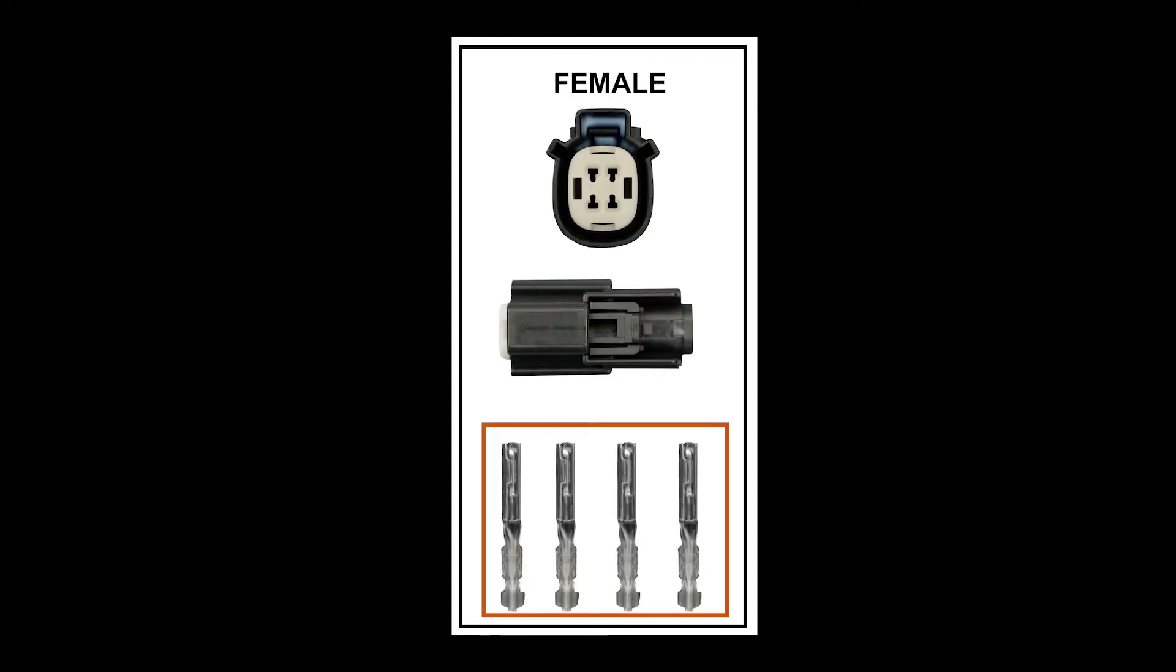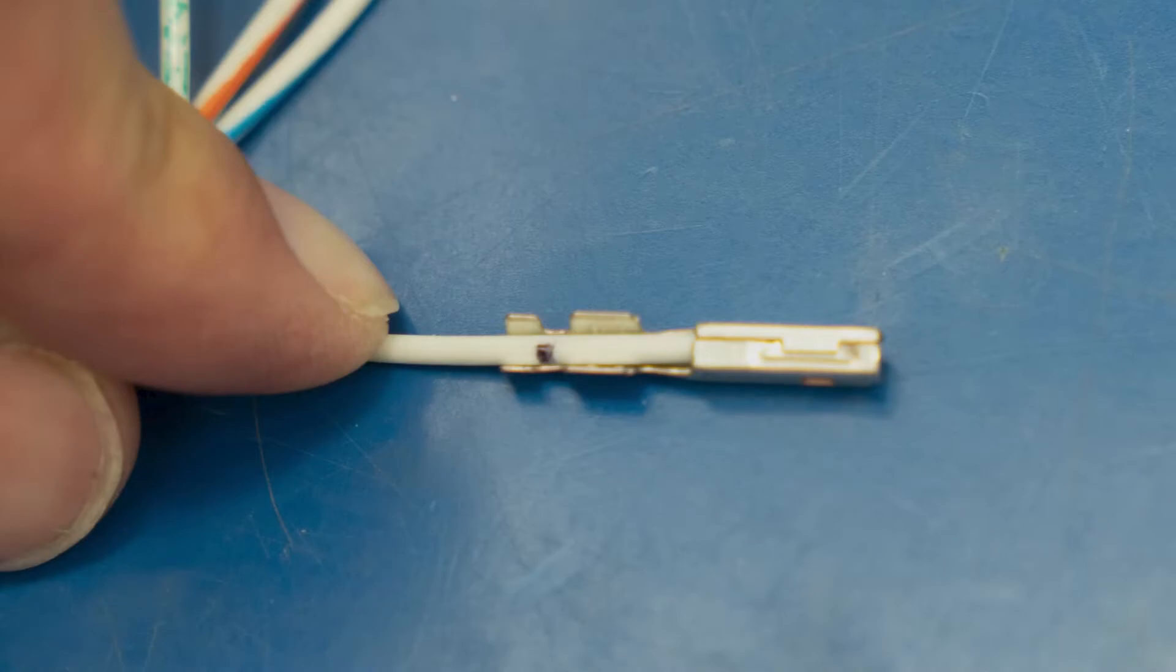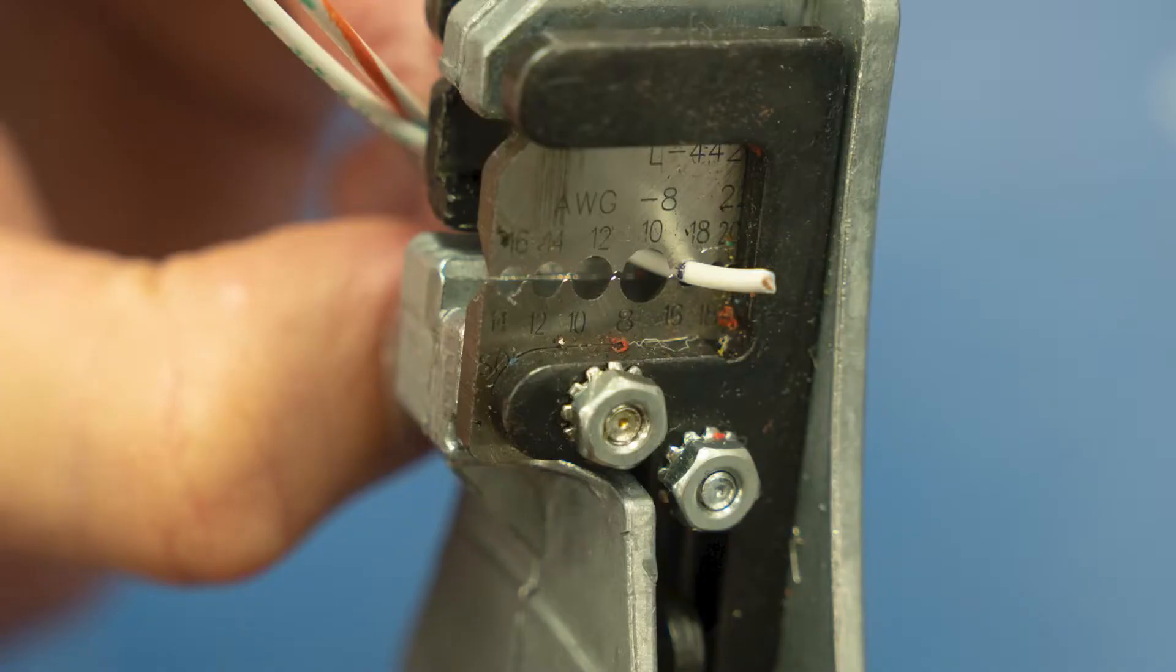Twist the shield to clean it and keep it out of the way. Next grab the socket ends of the female kit. Place the first wire into the socket and mark as shown.